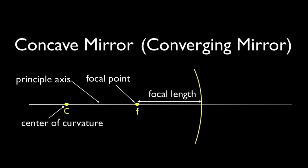C is the center of curvature — this is a spherical mirror, like a big circle, and C is at the center of that circle. The distance from C to the mirror is the radius of that circle. Point F is at a focal length away from the mirror, and you'll notice that F is between C and the mirror. So the focal length is one half of the distance to C.